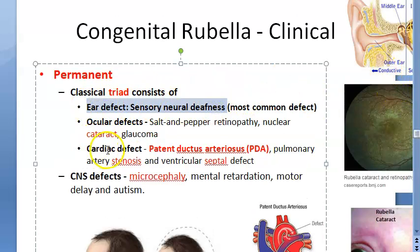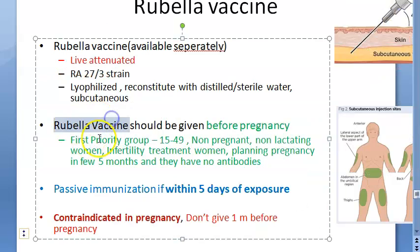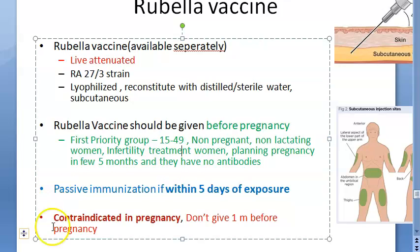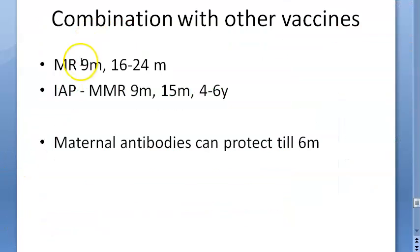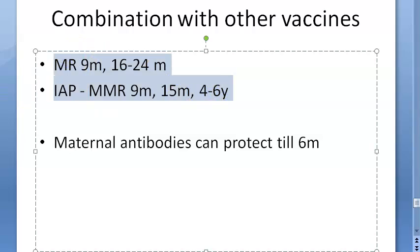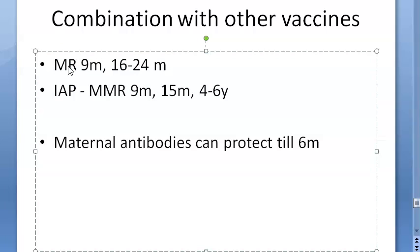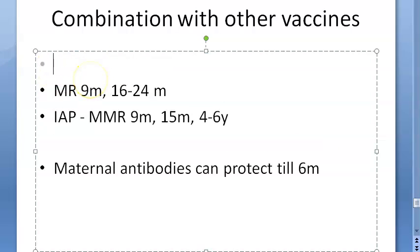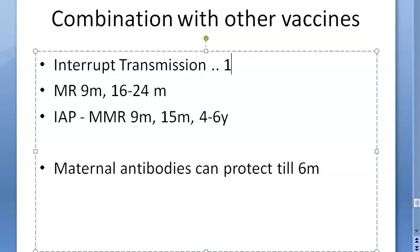The most common defect is sensorineural deafness. For prevention, the first priority is non-pregnant, non-lactating women of reproductive age (15–49). To interrupt transmission, vaccination is given to all children aged 1–14 years using MR or MMR. Maternal antibodies protect until six months of age, which is why vaccination begins at nine months. Vaccinating the 1–14 age group interrupts rubella transmission.